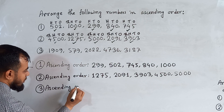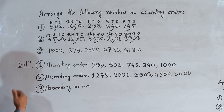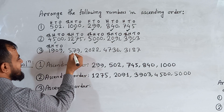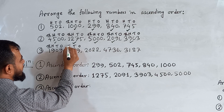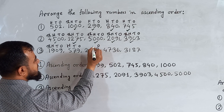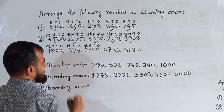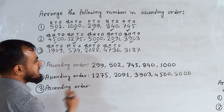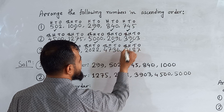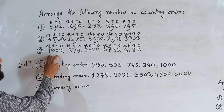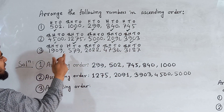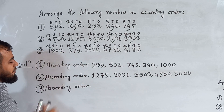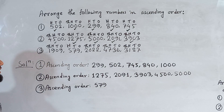For question number three, we identify place values similarly. The first number: 9 in ones, 0 in tens, 9 in hundreds, 1 in thousands. The second: 9 in ones, 7 in tens, 5 in hundreds — its highest place value is hundreds only, making it the smallest number. So 579 is written first in ascending order.